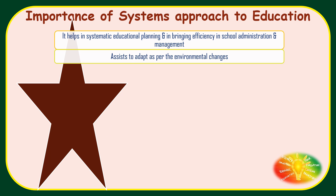Next is — it assists to adapt as per the environmental changes. Toh humne dekha hai ki systems approach mein environment effective role play karta hai. Toh education mein bhi jab bhi koi environmental changes hai, parents ki kuch particular demand hai, koi circular aaya, toh education institution has to be ready as per the demands of the departments or the boards. Jo bhi environmental changes ho, as per the need of the society, ICT based curriculum — institution is always flexible and ready to adapt.